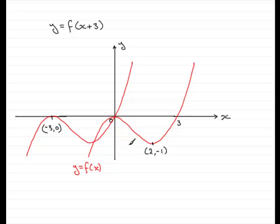And as for the minimum point here, if that went three units back in this direction, then its coordinates are going to be minus 1 comma minus 1. All right, that would be that point on the curve.